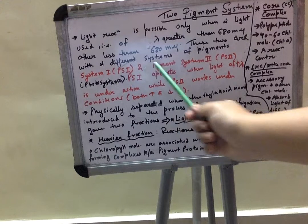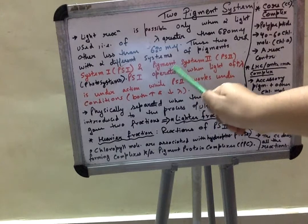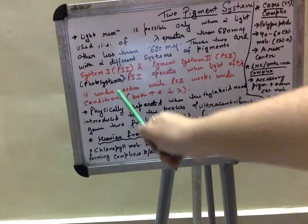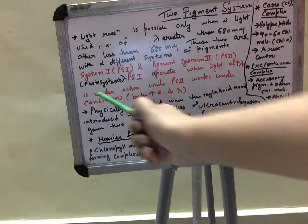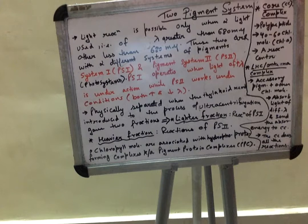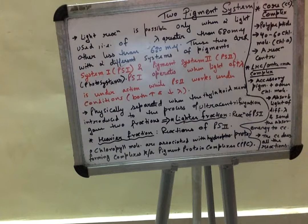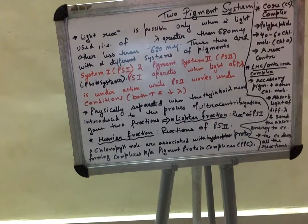These are PS1 and PS2, that is pigment system one and pigment system two. PS1 operates when light of greater wavelength is under action — PS1 will only work when light rays greater than 680 nanometers are used. PS2 works under both conditions, that is both under lower as well as higher wavelength of 680 nanometers.